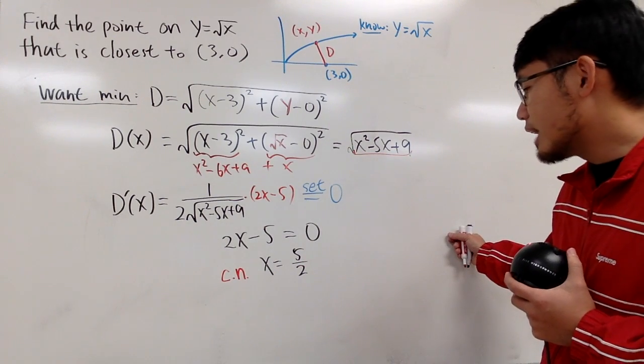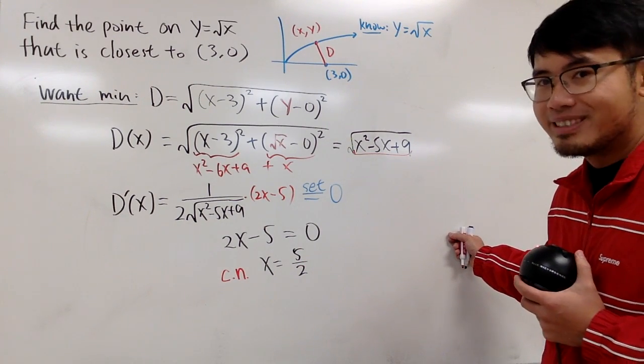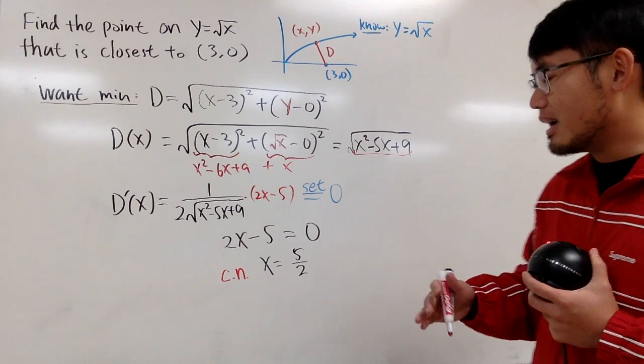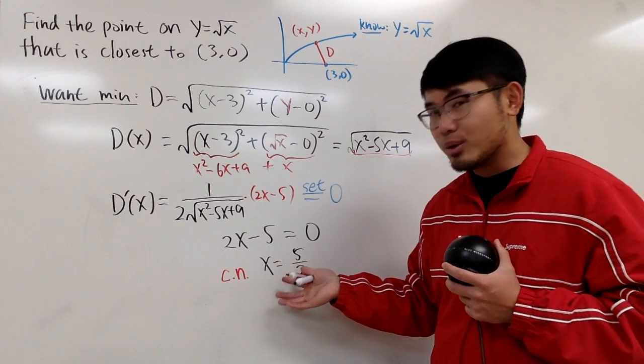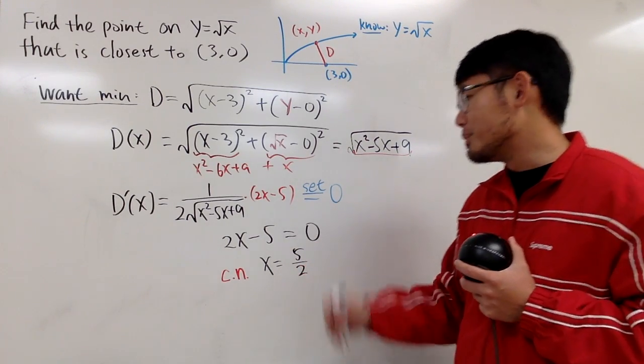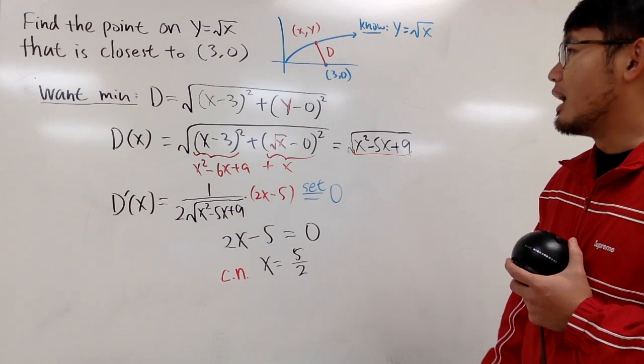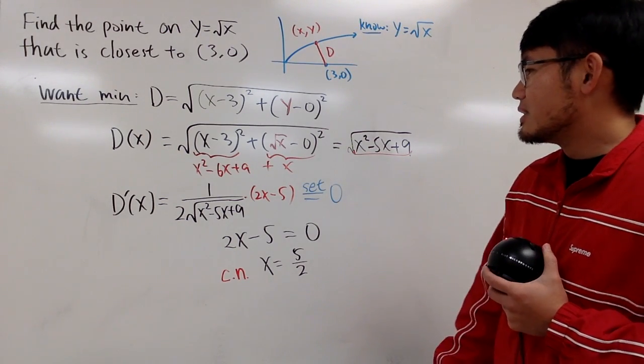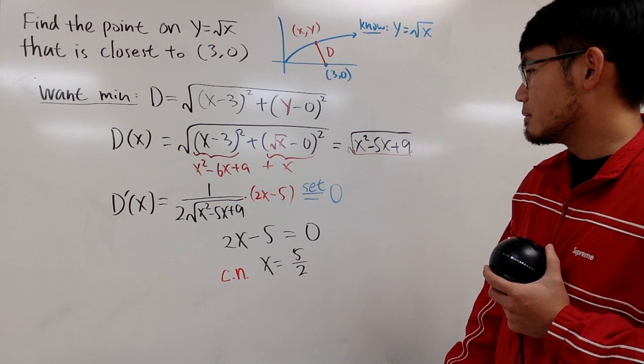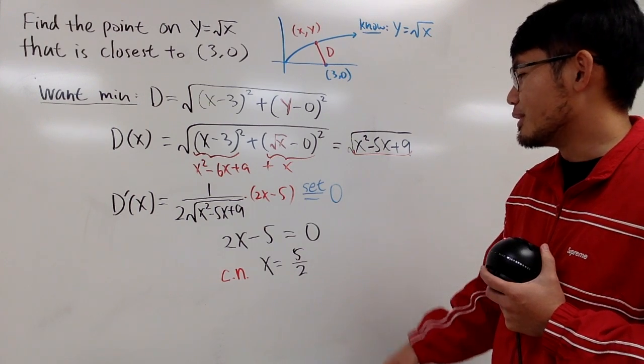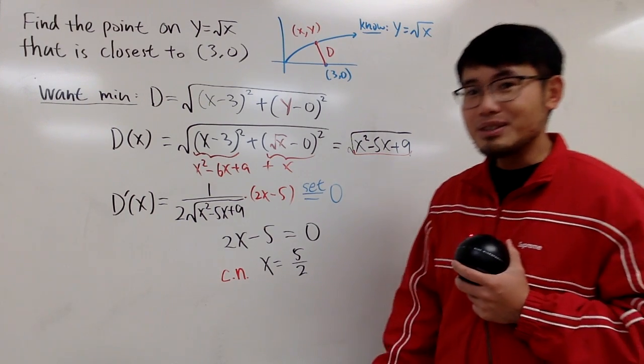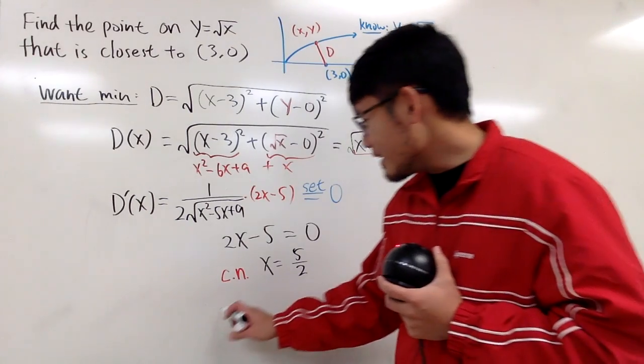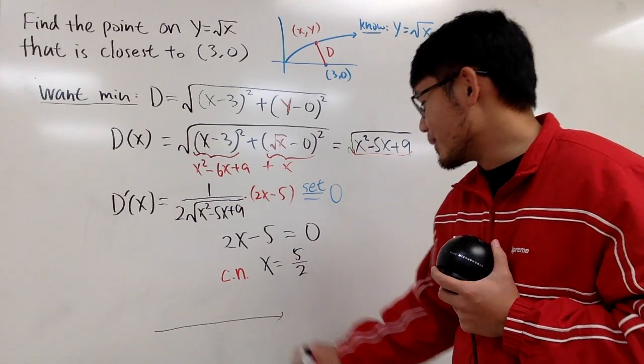And you should take some time to verify this on your own to see that this is indeed the local minimum right here, depending on how much we're going to show. I don't want to do a second derivative right here. Here is the first derivative test. So this is all we can do.